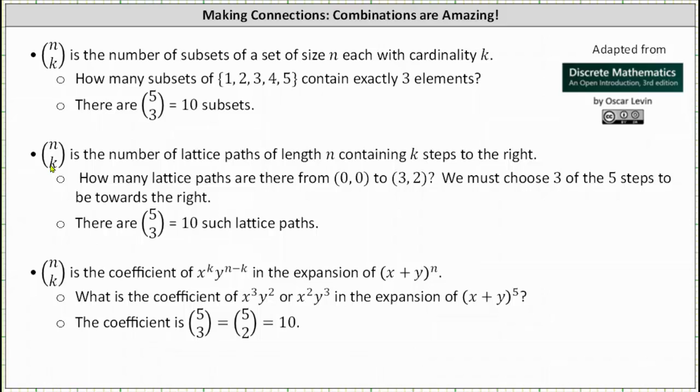Next, n choose k is a number of lattice paths, meaning shortest lattice paths, of length n containing k steps to the right. As an example, how many lattice paths are there from zero comma zero to three comma two? We must choose three of the five steps to be towards the right. There are five choose three or ten such lattice paths.